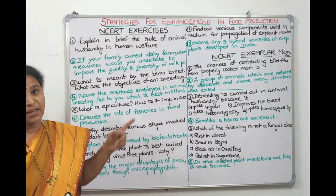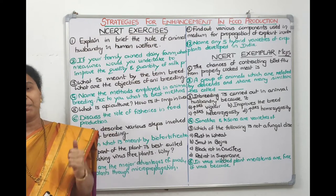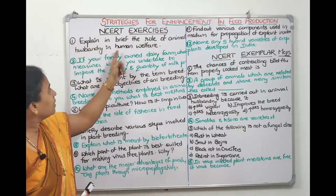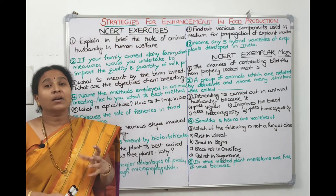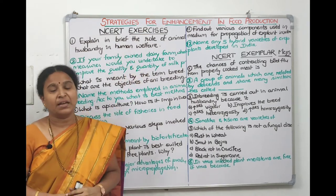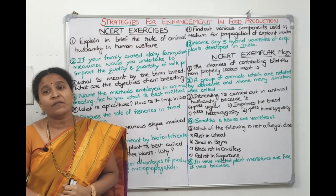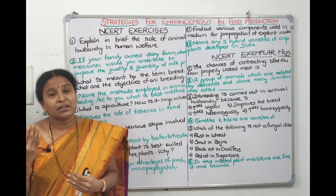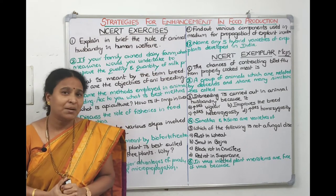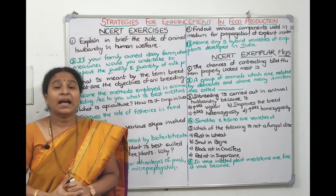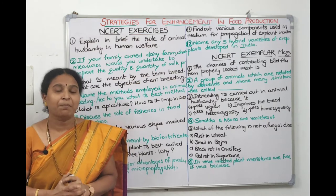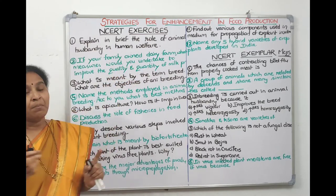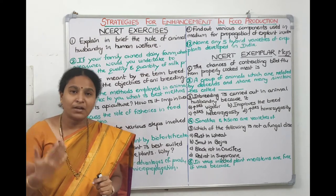Let's start with the NCERT exercise questions from your second-year NCERT textbook. The first question: explain in brief the role of animal husbandry in human welfare. Animal husbandry means rearing of animals, taking care of animals, breeding domestic animals, and cultivating them in a better scientific manner. They're asking what benefits animals give to human welfare by rearing domestic animals.